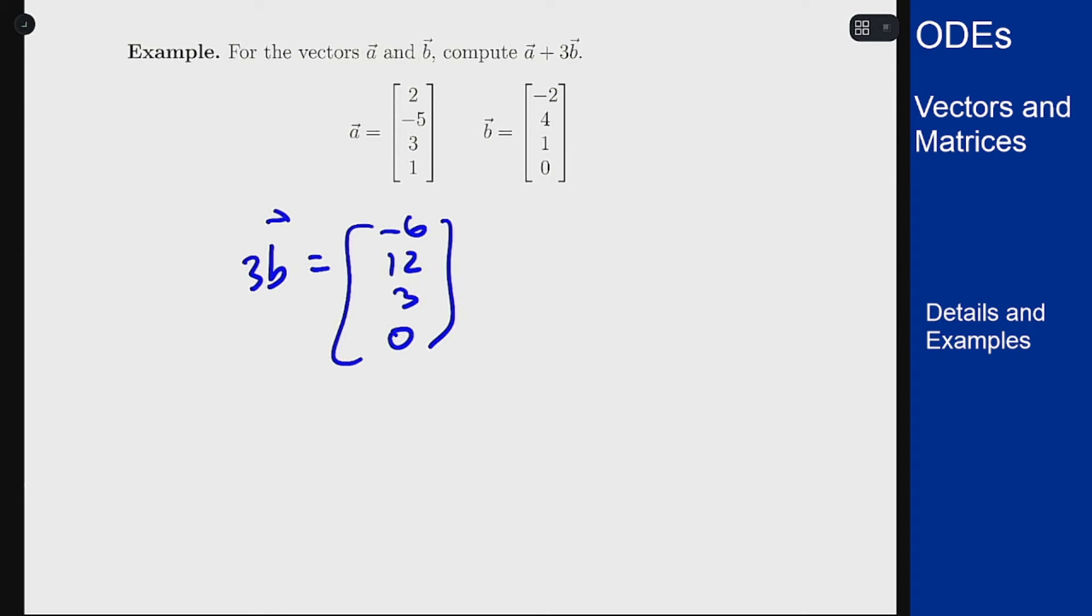And I want to add that to a, so a plus 3b means I'm adding the components one at a time. So 2 plus minus 6 is a minus 4, minus 5 plus 12 is a 7, 3 plus 3 is 6, and 1 plus 0 is 1. That's how you would compute a plus 3b.